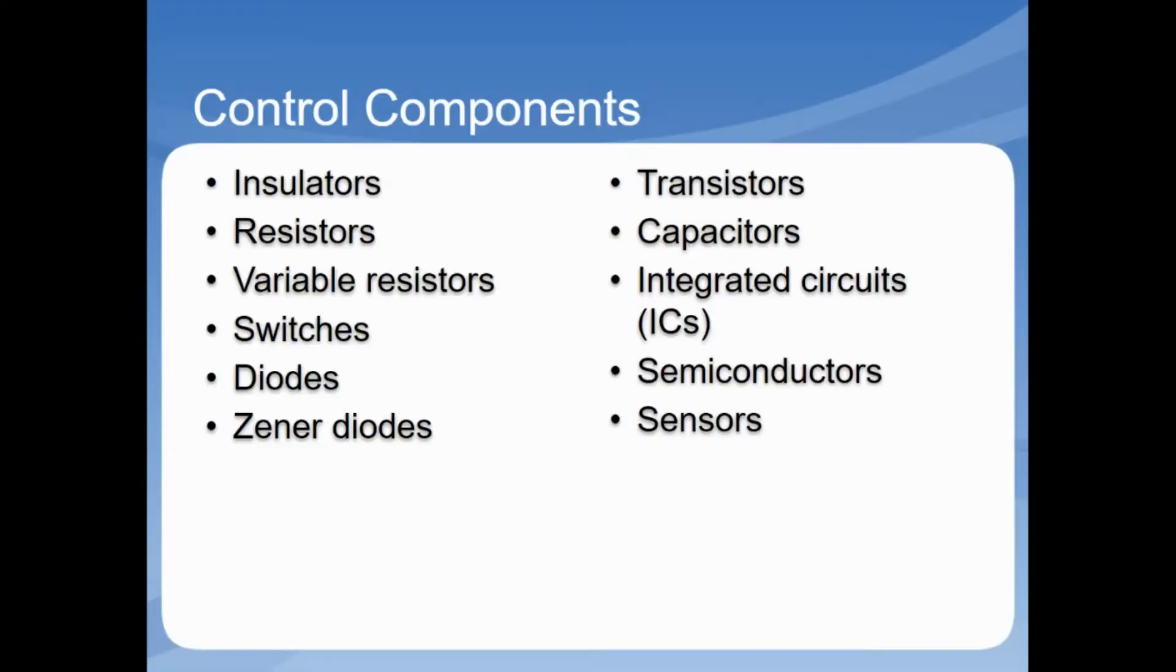In conclusion, control devices direct and/or limit current flows so a circuit meets its desired function. For example, insulators keep current in the conductor and protect against shorts, and resistors limit current flow to protect sensitive components. All of these components listed here are considered control components. I hope you enjoyed this lecture, have a great day.